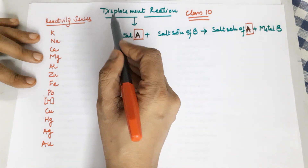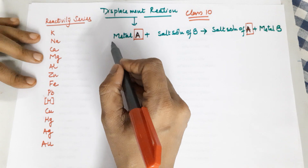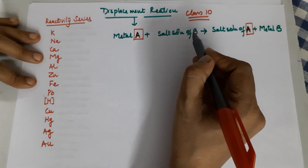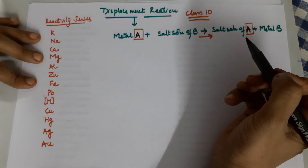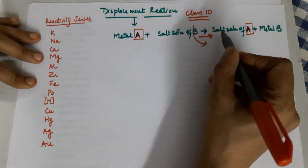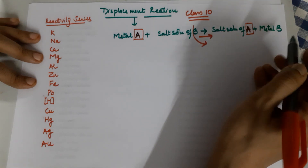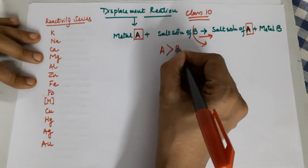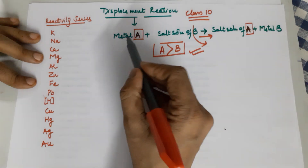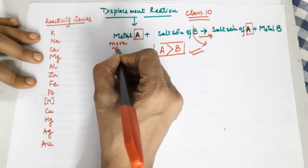One metal is displaced by another. You have a metal A which is dropped into a salt solution of another metal B. If this reaction is happening, it means A is able to remove B from the salt solution and itself goes into the salt solution, while B is standing outside. This happens because A is more reactive than B — that is the cause of displacement reaction.